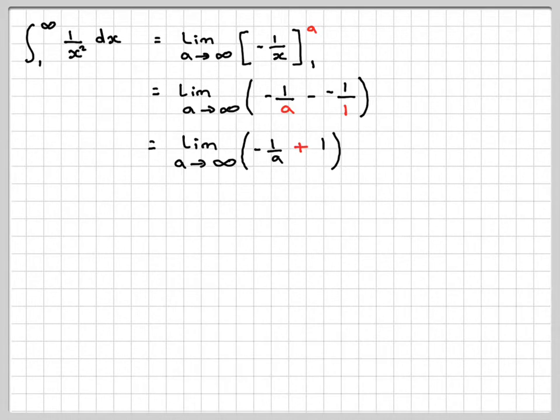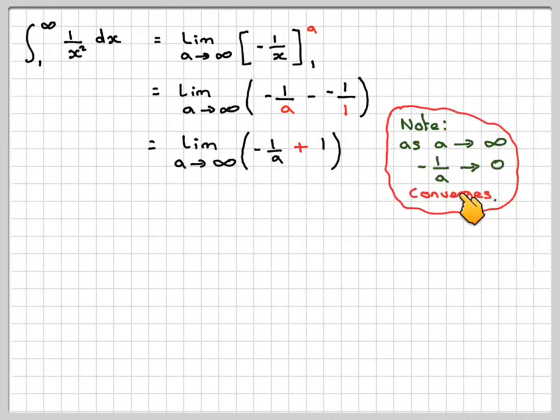Now, what happens to 1 over a as a becomes very large? As a goes to infinity, if you get 1 over a large number, it is approaching 0. So we can say that minus 1 over a approaches 0. Therefore, we can say that this bit here is actually 0. This is an example of convergent, so it's going to converge onto a number which is 0.